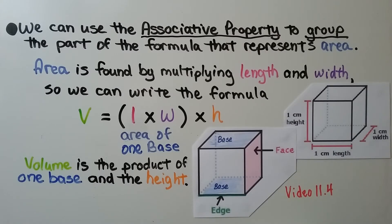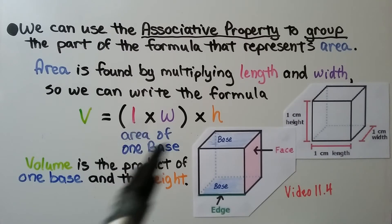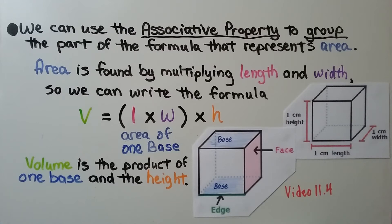We can use the associative property to group the part of the formula that represents area. Area is found by multiplying length and width, so we can write the formula, the area of one base, as length times width. And volume is the product of one base, so it's either this base or this base. It's one of the bases, and the height. And we learned about face, edge, and base parts of a 3D figure in video 11.4.